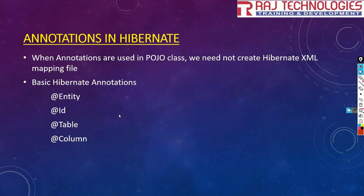@Table is used to change the name of the table. If our POJO class name and database table name are different, we can map to the table using @Table. @Column is used to map a POJO class property with a table column when the column name is different. So @Table handles different table names and @Column handles different column names.